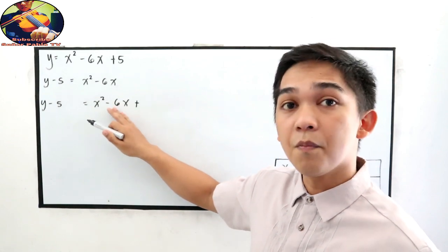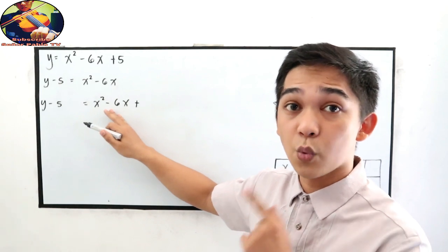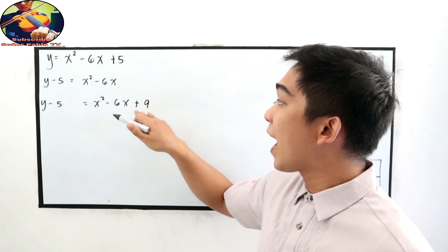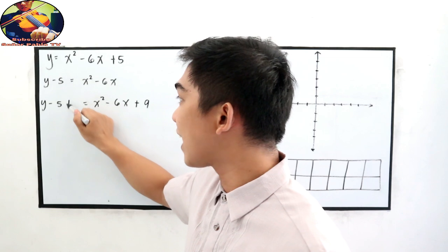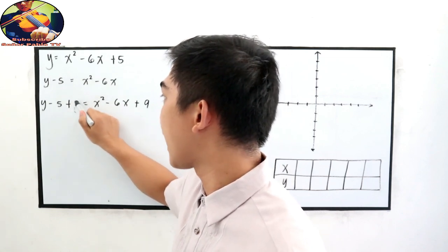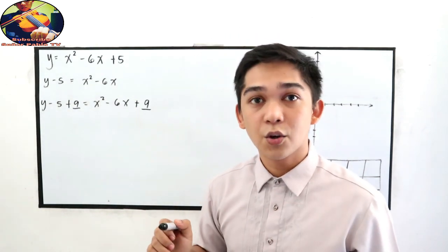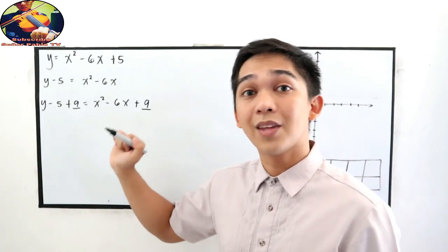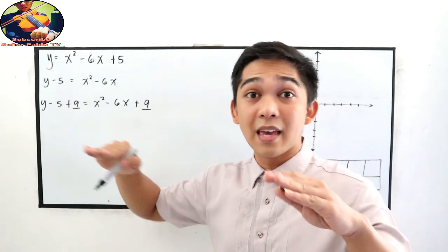Take the middle term divided by 2: 6 divided by 2, then square it — 3 squared is 9. We add 9 on the right side of the equation. Therefore, we need to add 9 on the left side of the equation as well. Take note: if you add a number on the right side, you should add that same number on the left side to keep the equation balanced.